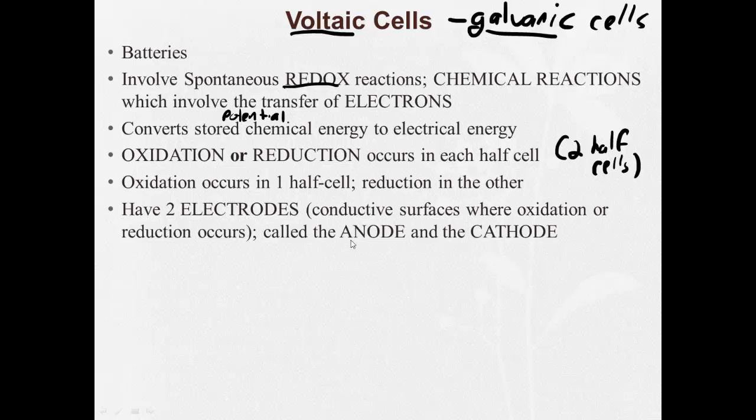Voltaic cells have two electrodes, which are conductive surfaces where oxidation or reduction occurs. And they are called the anode and the cathode. Here's another phrase that pays. You have to memorize: Red cat and an ox. It means reduction occurs at the cathode, and oxidation occurs at the anode.